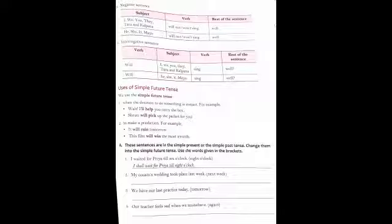Now, how we can use the Simple Future Tense. First, we use the Simple Future Tense when the decision to do something is instant. For example: 'Wait, I will help you carry the box.' Over here, 'I will help' is your Simple Future Tense form of a verb, and this shows that the decision is taken instantly. Similarly, 'Shruti will pick up the packet for you' — 'will pick' is a Simple Future Tense form of a verb, and Shruti takes the decision to do this action instantly.